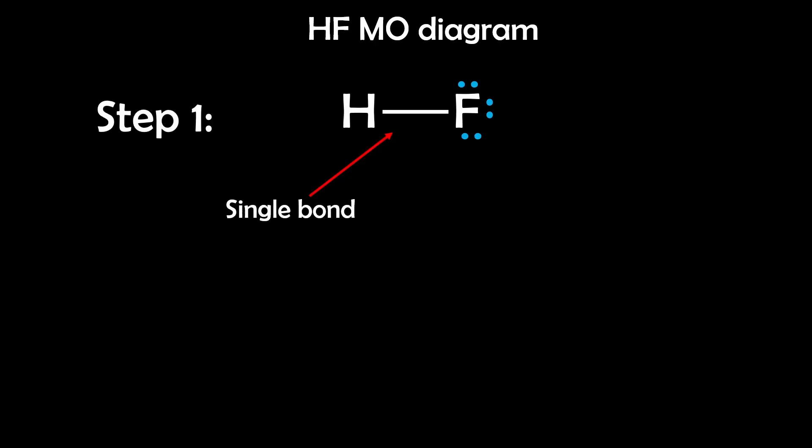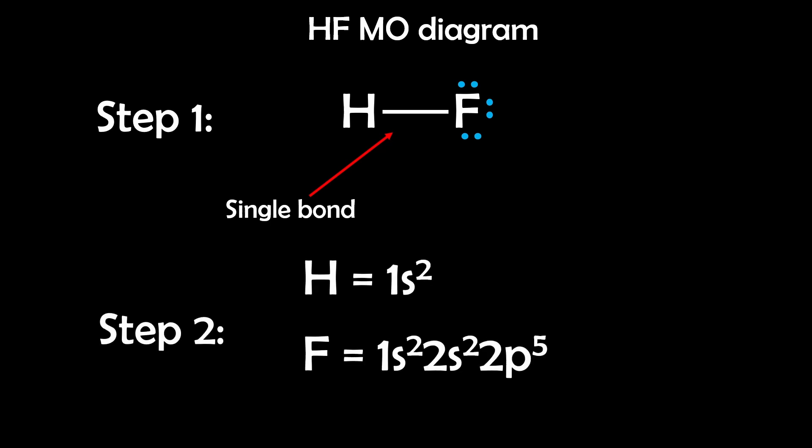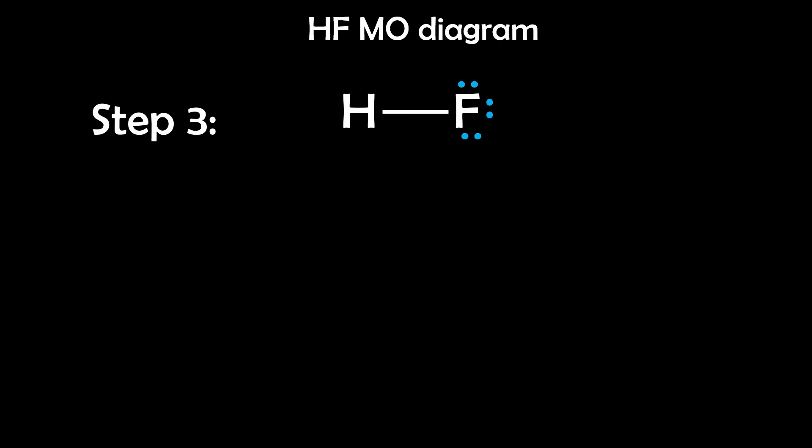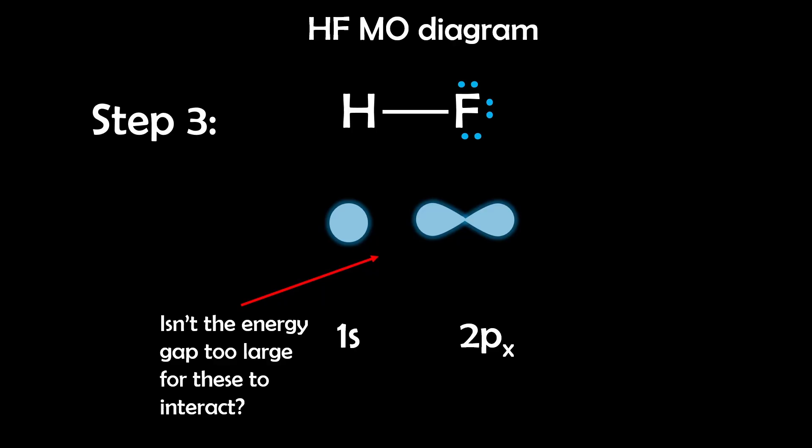Let's look at hydrogen fluoride as our next example — our first heteronuclear molecule, meaning a molecule with different elements. Step 1: Draw the Lewis structure — HF has a single bond between hydrogen and fluorine. Step 2: Electron configuration. Hydrogen is 1s¹, fluorine is 1s², 2s², 2p⁵. The key orbitals involved are hydrogen's 1s orbital and fluorine's 2px orbital, because it lines up directly on the bond axis. Step 3: Compare orbital energies. It might seem strange why hydrogen's 1s and fluorine's 2p orbitals interact since they're on different principal quantum energy levels.